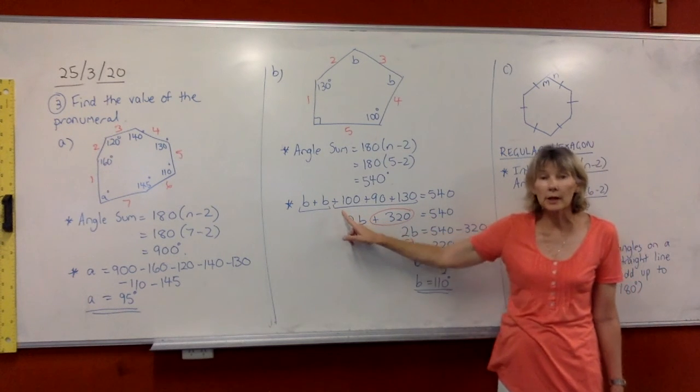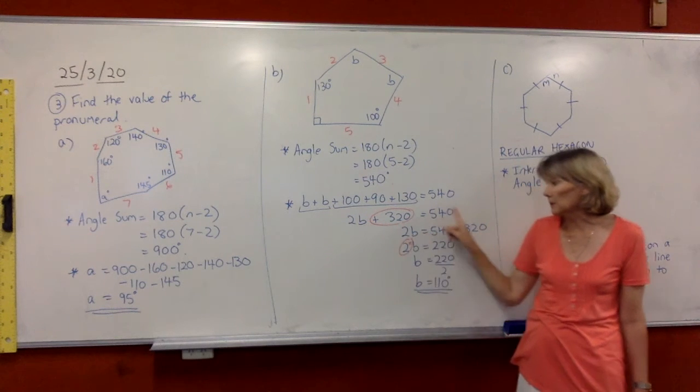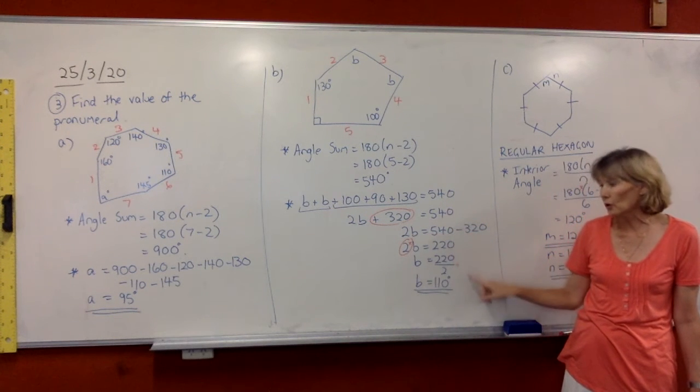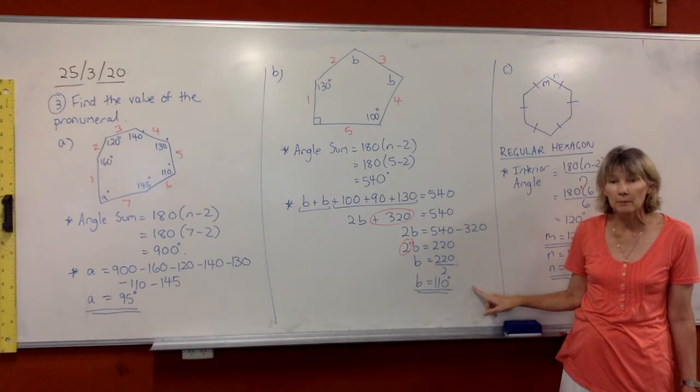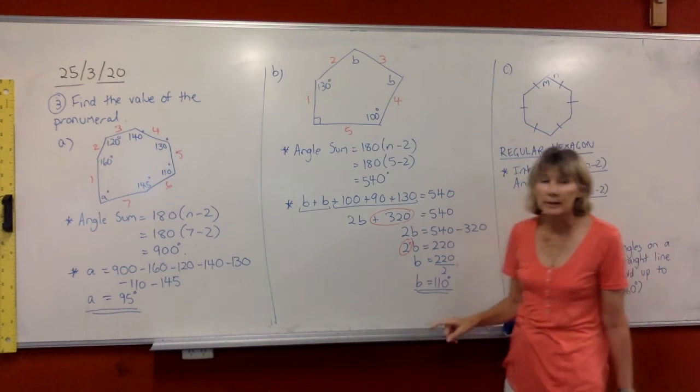So we can treat this like an equation. Collect your like terms, collect your numbers and keep going through solving your equation until you get your answer. b equals 110 degrees.